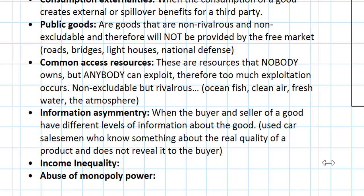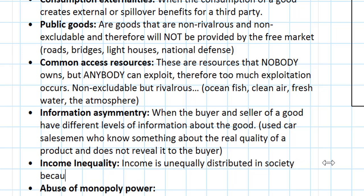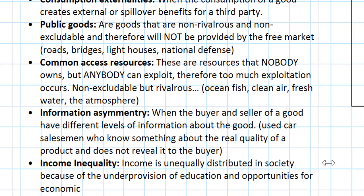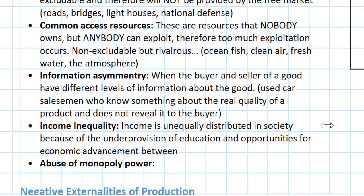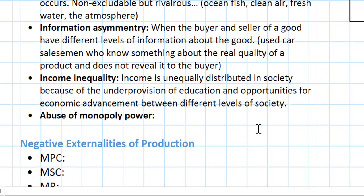Another type of market failure we'll study in macroeconomics is income inequality, which seems a little different than all the others because it takes place on a national level. This is a situation in which income is unequally distributed in society because of the under-provision of education and opportunities for economic advancement between different social levels. This is obviously a very controversial topic at the core of many political, social, and economic discussions today, but income inequality could be said to result from a market failure in which resources are inefficiently allocated towards services such as education and networking opportunities.